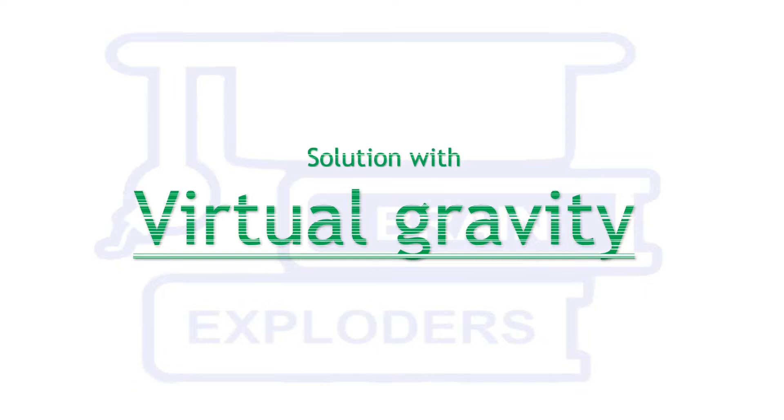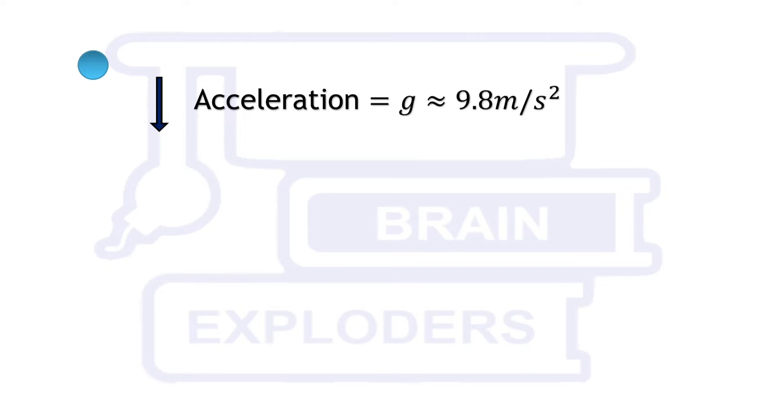Whenever any object falls freely, it experiences an acceleration due to gravity. If we ignore resistance due to air, then no matter what is the mass and density of the object, the acceleration is always equal to g near earth's surface.